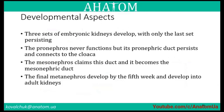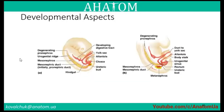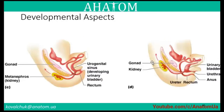Developmental aspects: three sets of embryonic kidneys develop, with only the last set persisting. The pronephros never functions but its pronephric ducts persist and connect to the cloaca. Next are the mesonephros and final metanephros development. Initially the kidney is located near the pelvic region, then moves up toward the diaphragm.